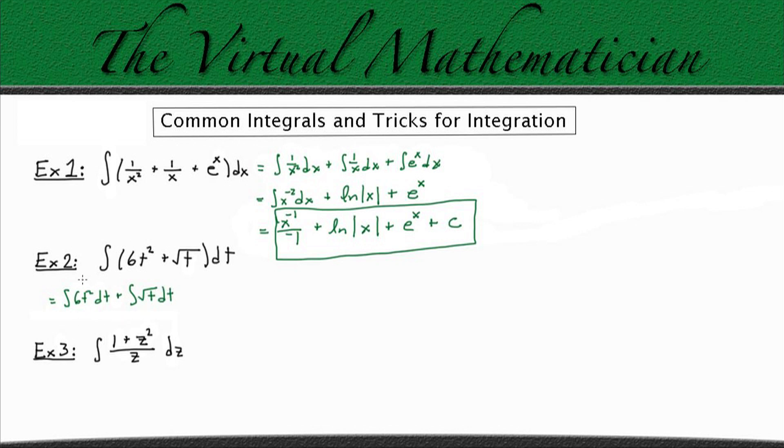Now, the second rule I'd like to bring up has to do with constants. Just like for derivatives, whenever we have a constant inside our integral, we can pull that out and just multiply it by whatever the integral becomes at the end. And another trick I'd like to bring up is whenever we have a variable underneath a square root or a cube root or anything like that, we can rewrite it as a function to a power by algebra. So the square root of t equals t to the 1 half power. So then we can rewrite both of these integrals as 6 times the integral of t squared dt plus the integral of t to the 1 half power dt.